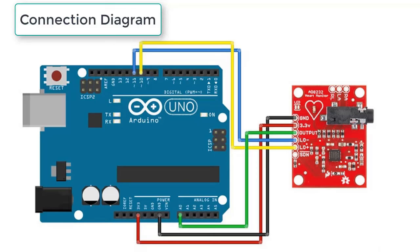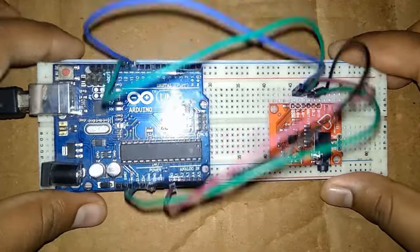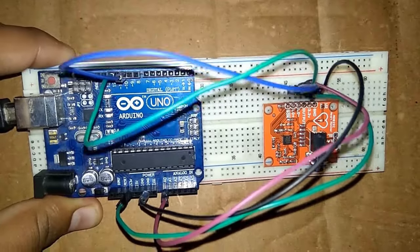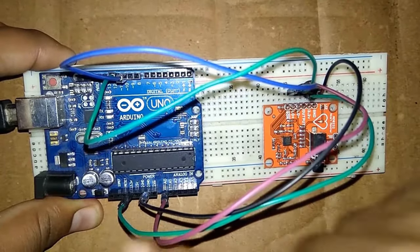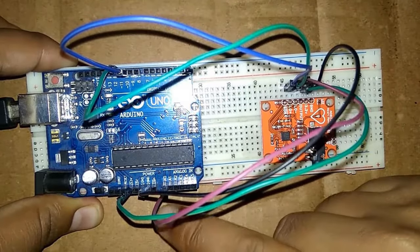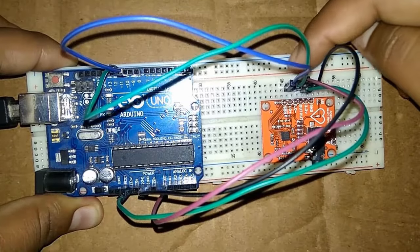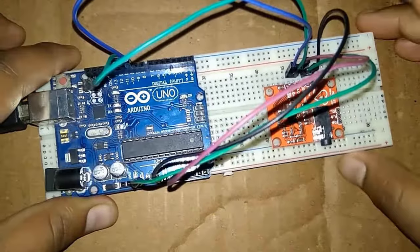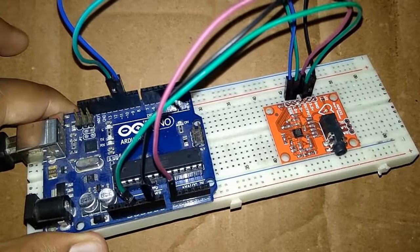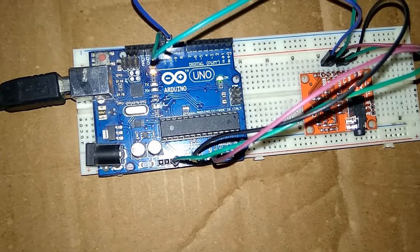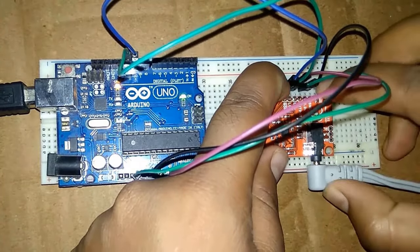This is the connection between Arduino and the ECG sensor. We connected 3.3V to 3.3V, ground to ground, output to A0, LO minus to digital pin 11, and LO plus to pin 10. SDN is left unconnected. The circuit is assembled according to this diagram — ground to ground, 3.3V to 3.3V, A0 to output, and LO minus and LO plus to pins 10 and 11. Finally, insert the jack into the AD8232 port.